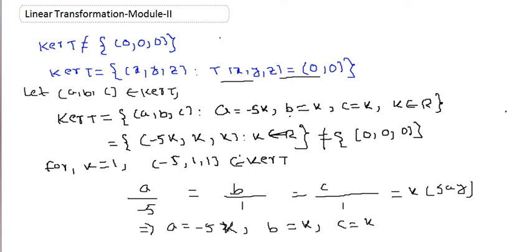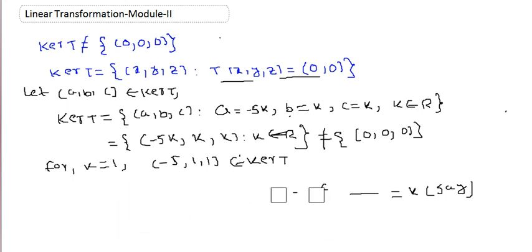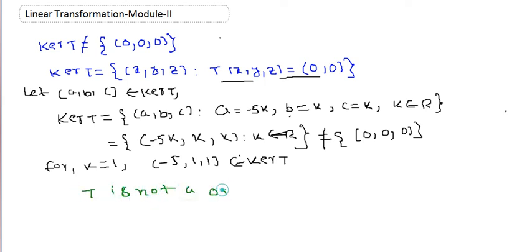Since the kernel of T already contains a vector which is not the zero vector, the kernel of T is not equal to {(0,0,0)}. From our previous results, this means T is NOT a one-to-one map. For T to be one-to-one, the kernel must equal the singleton set {(0,0,0)}, but that is not the case here. I hope you understand the problem — comment below if not. Thank you.